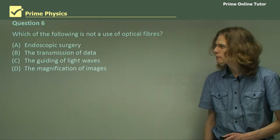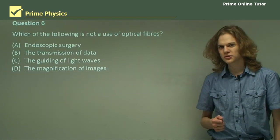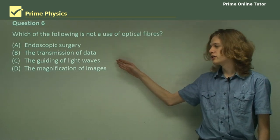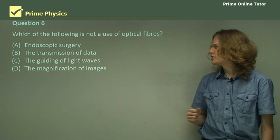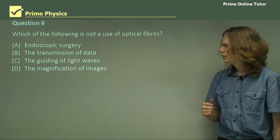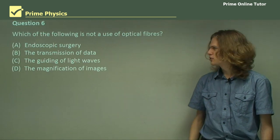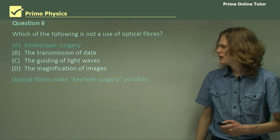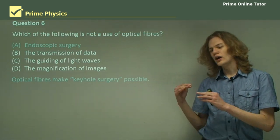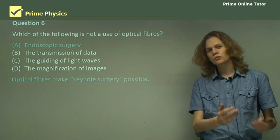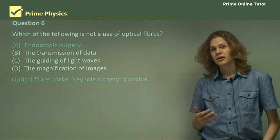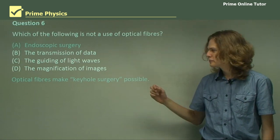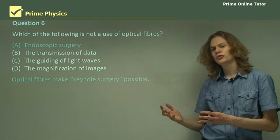Question 6. Which of the following is not a use of optical fibers? Is it endoscopic surgery, the transmission of data, the guiding of light waves, or the magnification of images? So we have a few options. Let's go through them. Option A, endoscopic surgery — in an endoscope, we need to have a way of getting light into the cavity and a way of getting light out. In an endoscope, both of those will be using optical fibers, so optical fibers make keyhole surgery possible.